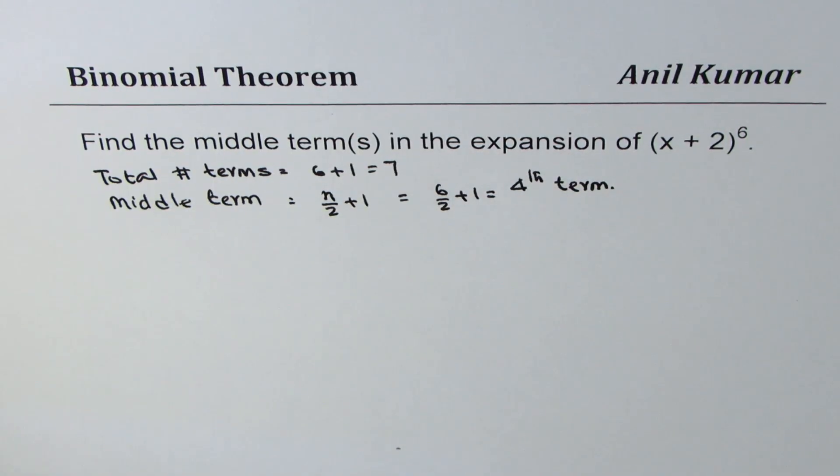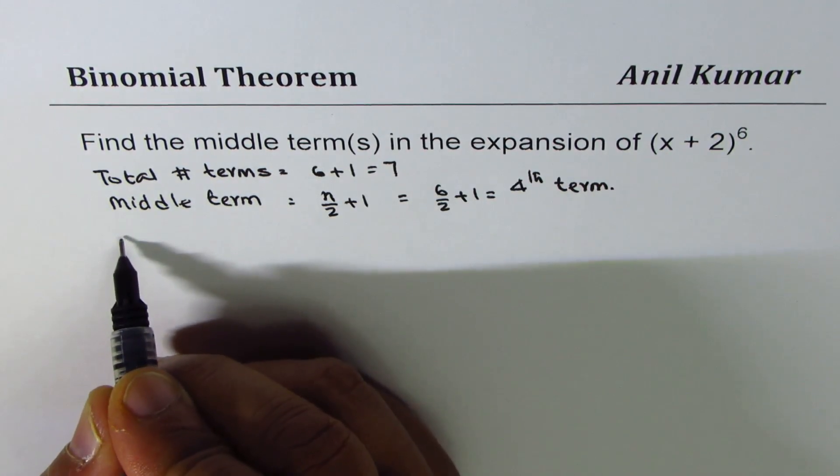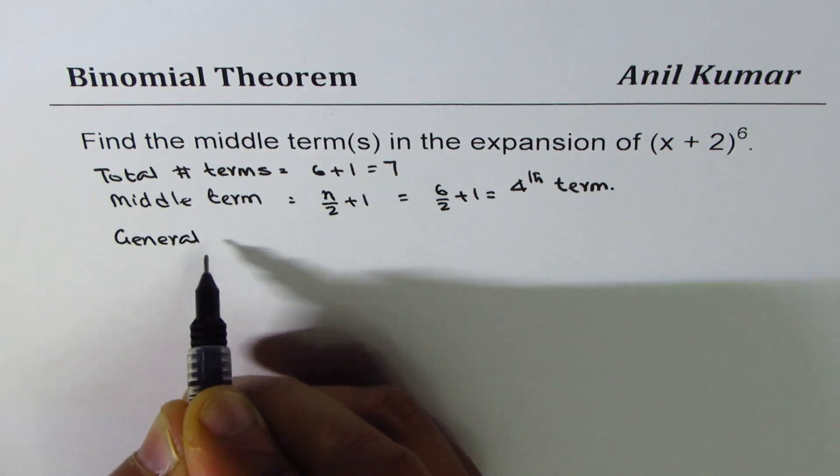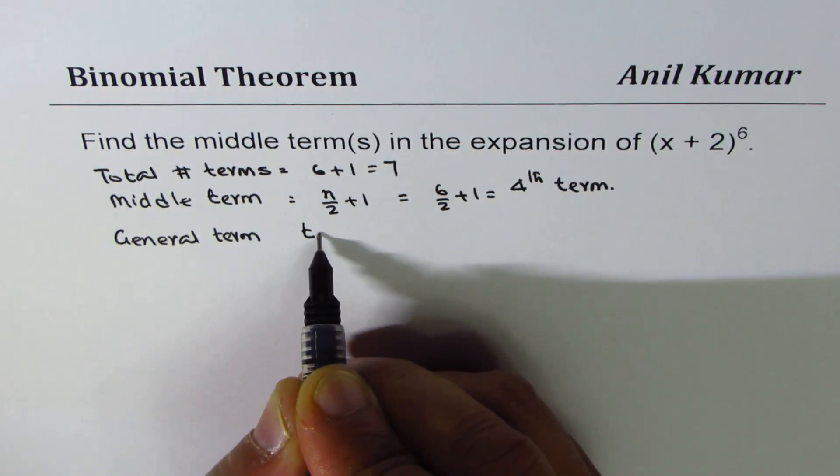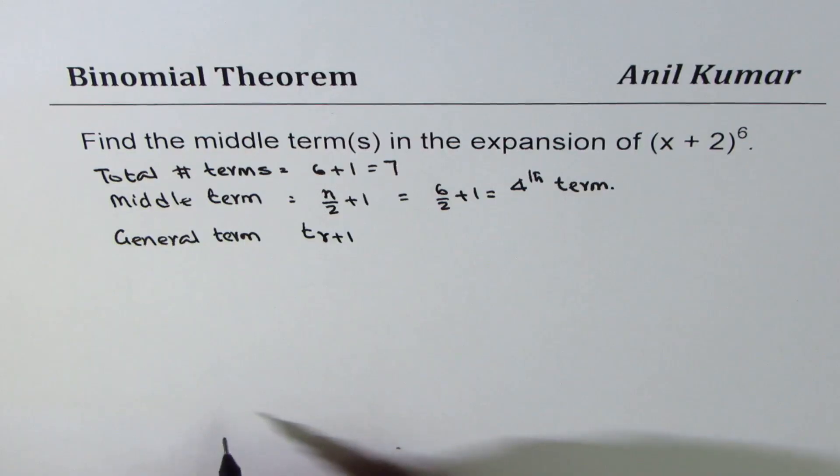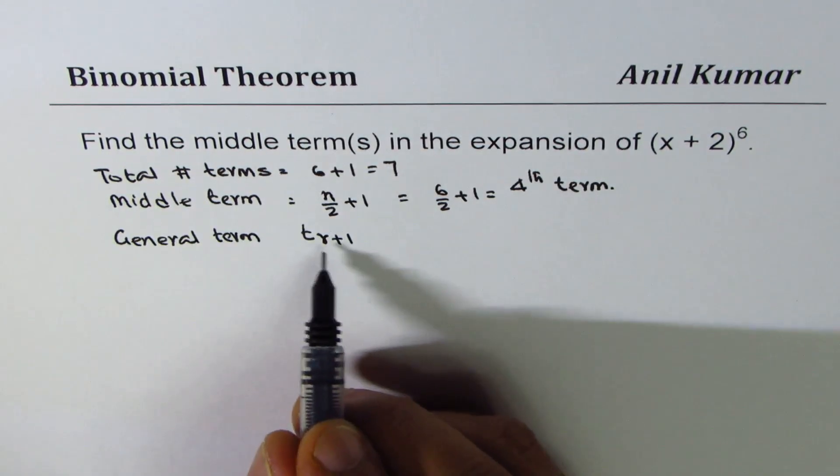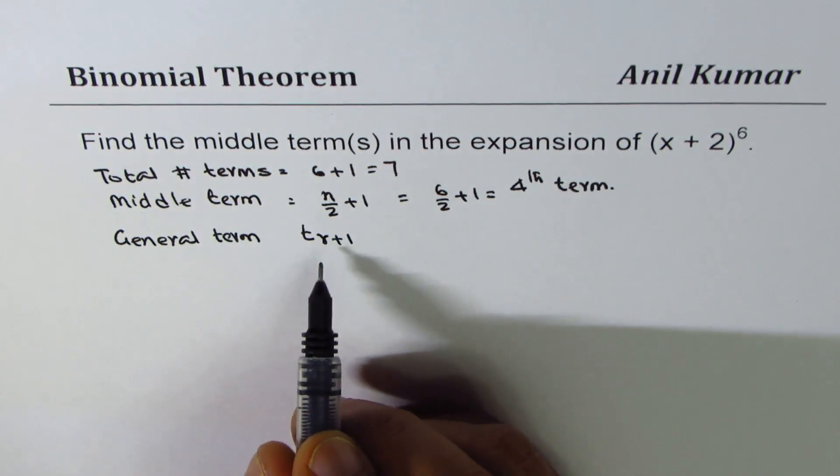For a general term, the formula is T_r+1. So for the fourth term, r is going to be 3. So we are looking for T_3+1.